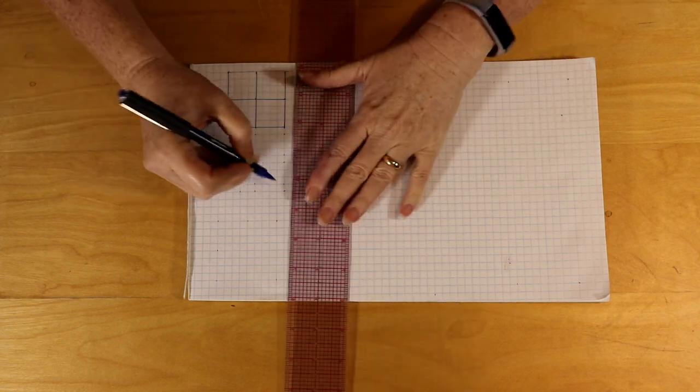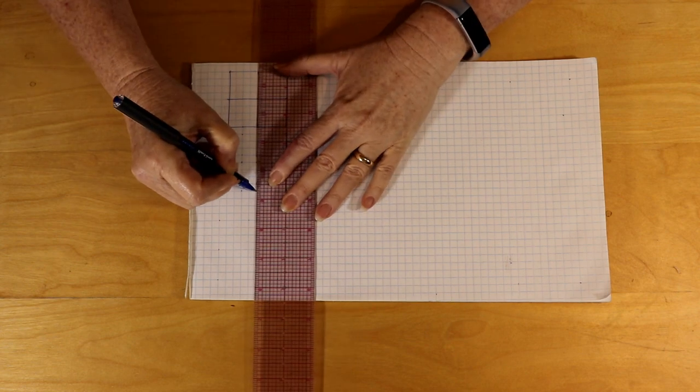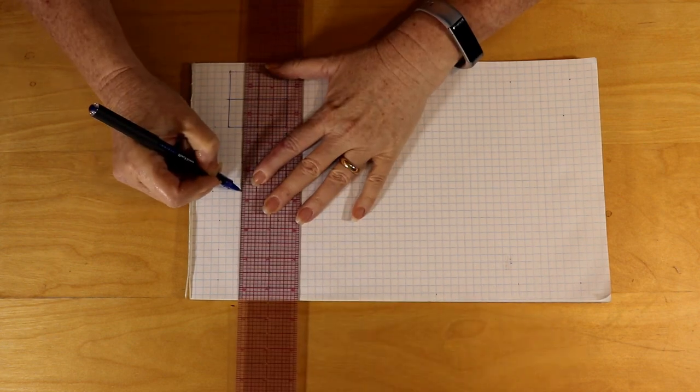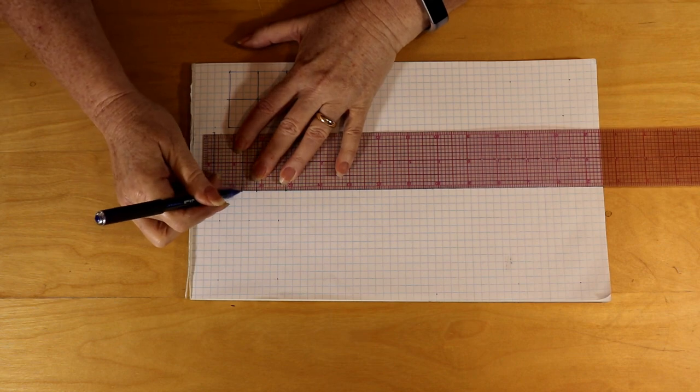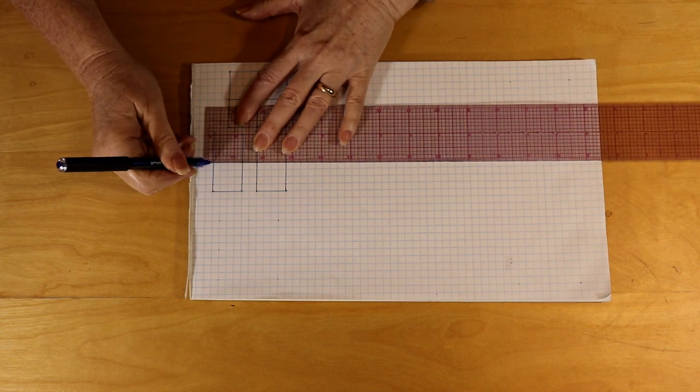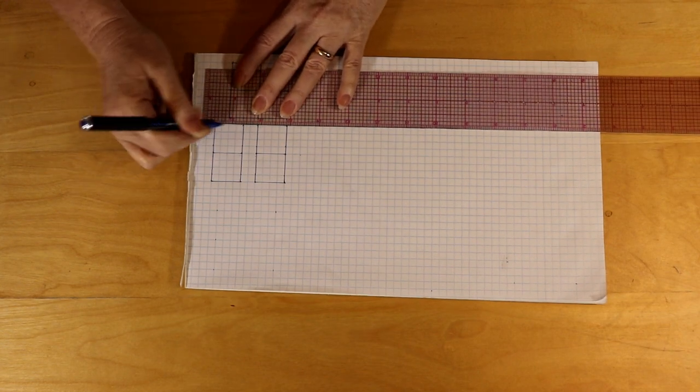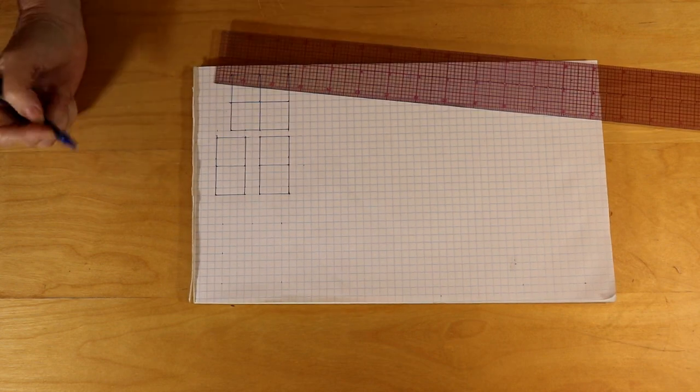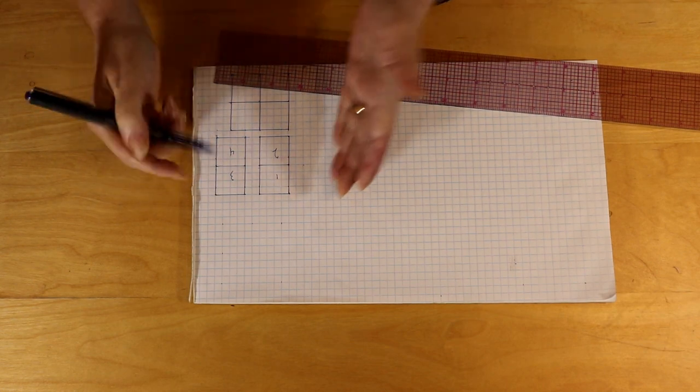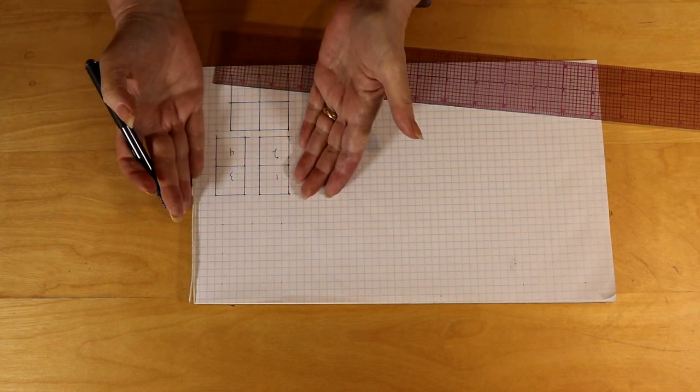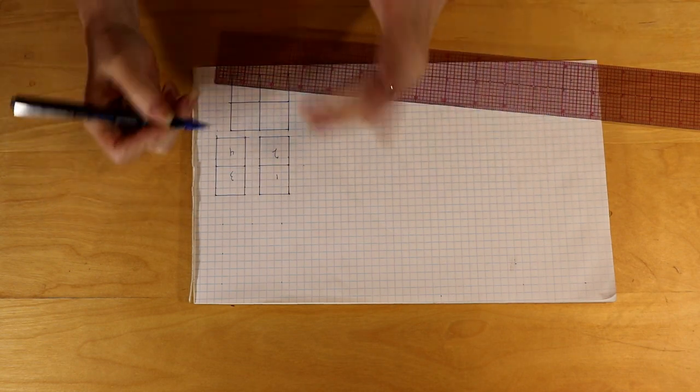So if we were going to do a foundation paper piece four patch design, it would look like this. And that's what it would look like. So you'd number your one, two, three, four. And then once you're finished putting all those fabrics onto that piece of paper, then you could stitch them together and they would create a four patch.